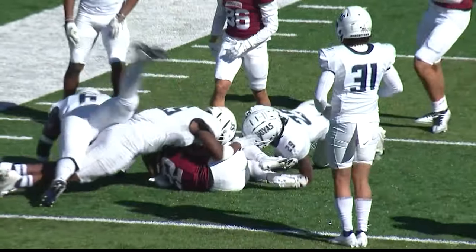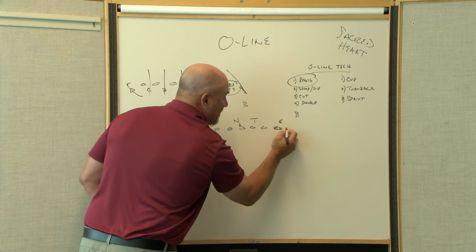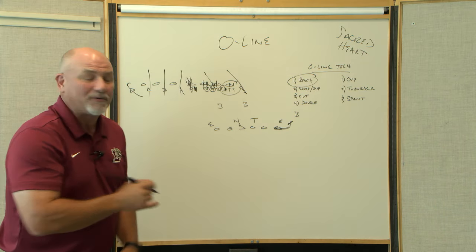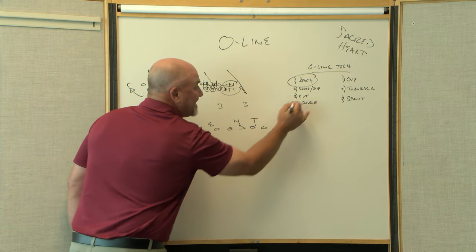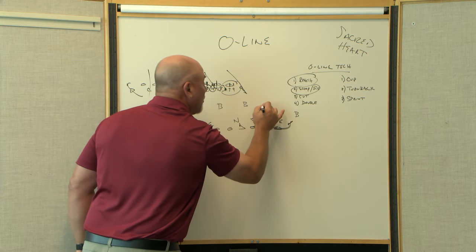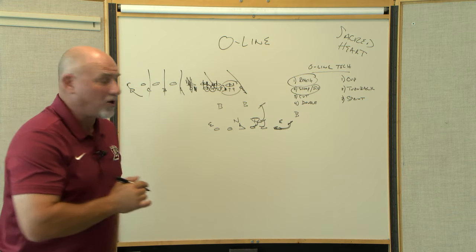If we talk about a reach block, well right there, that's Mason Gilbert. If we're running the ball outside, we need to reach the nine technique, we need to get to the outside. On the inside, we may need to scoop or slip. So both of these guys taking the tackle up to the linebacker.